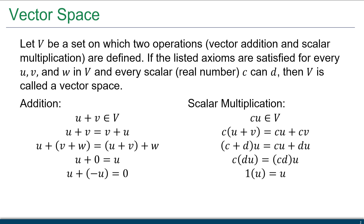If u is how we get from the origin to the tip of u, then negative u undoes that — getting us back. Those are the five axioms for addition. For scalar multiplication, we have another five. The first is closure: if I have a scalar and a vector and multiply them, I still get a vector.